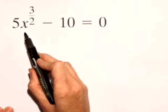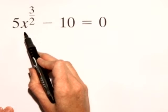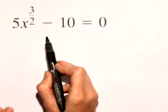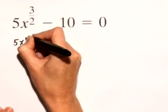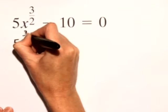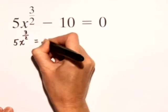Now remember, we're trying to solve for x, so we want to isolate x. So first, let's add 10 to both sides of this equation. And we'll have 5x to the 3 halves power is equal to 10.